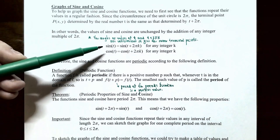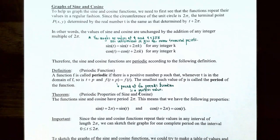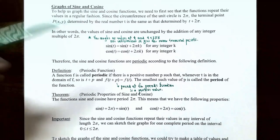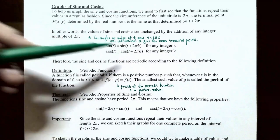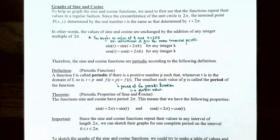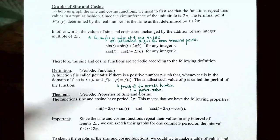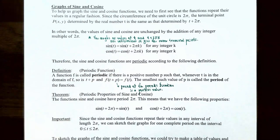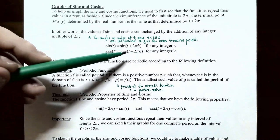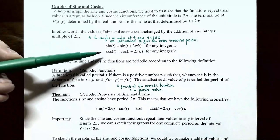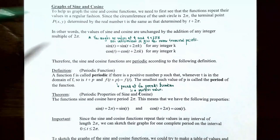In other words, sine of t equals sine of t + 2πk, where k is some integer. Adding a multiple of 2π to the argument gives the same y-value from the terminal point. The same holds for cosine: cosine of t equals cosine of t + 2πk, where k is an integer, because the cosine function is the x-coordinate of the terminal point, and the terminal points are the same for t and t + 2πk.